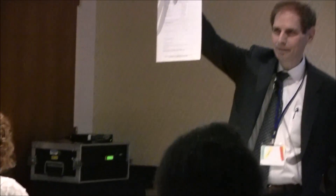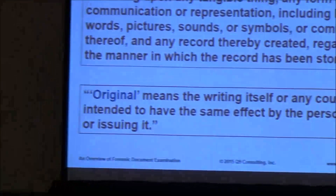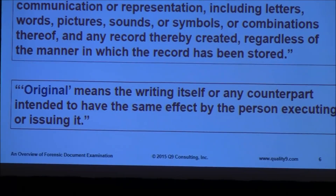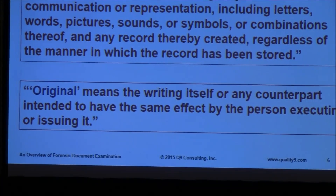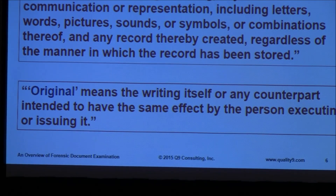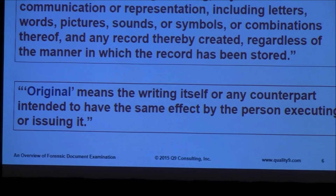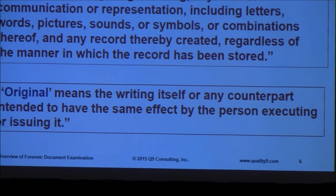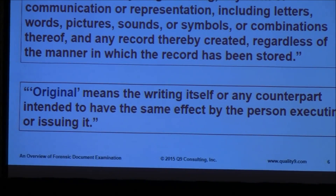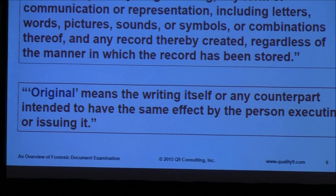Is this an original? No, it's a copy. But could it be an original? It could have someone's actual handwriting on it. Because it has actual handwriting on it. But let's look at the definition of an original — it could be a counterpart; it doesn't have to be the first generation. We'll look at this from California Code, Section 255, and also from the Federal Rules of Evidence perspective.